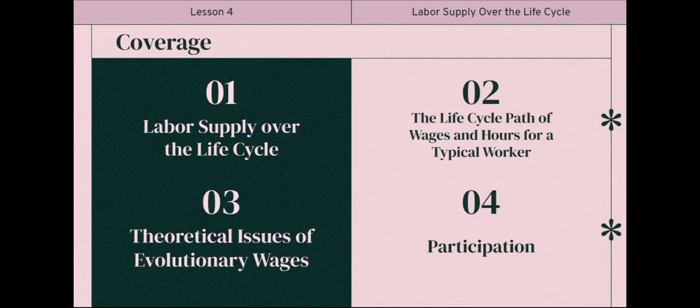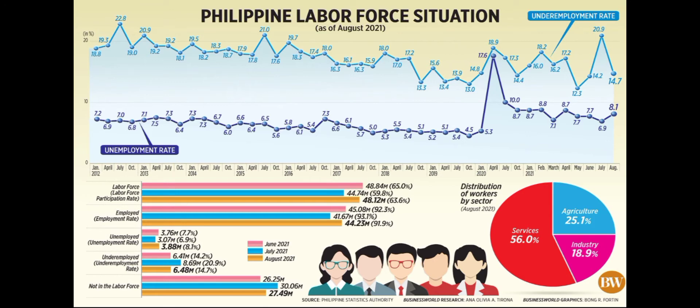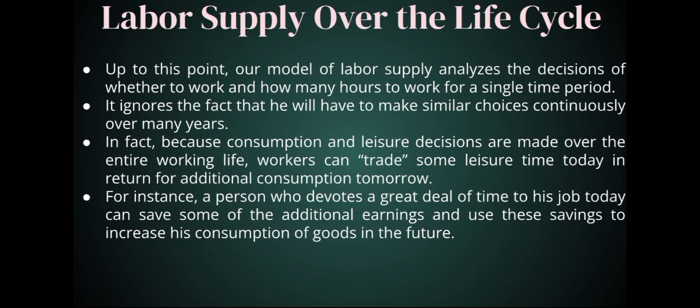Here is the coverage of our discussion and the topics that we will be discussing. In this graph you would see some of the major sectors that provided employment in the Philippines over the past years: 56% went to services, agriculture 25%, and industry 18.9%. So now let's talk about labor supply over the life cycle.